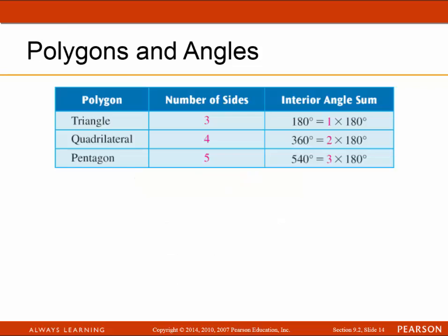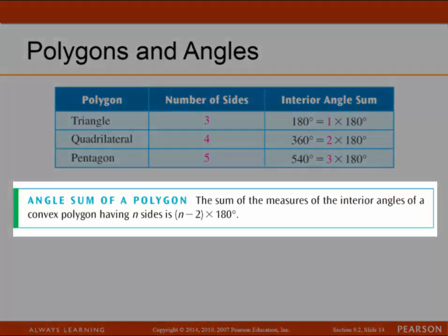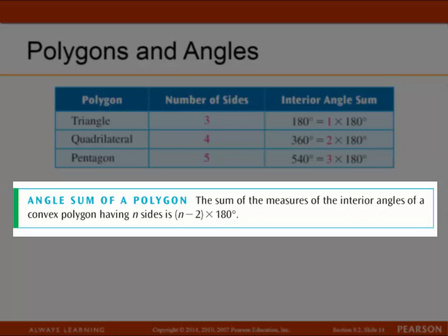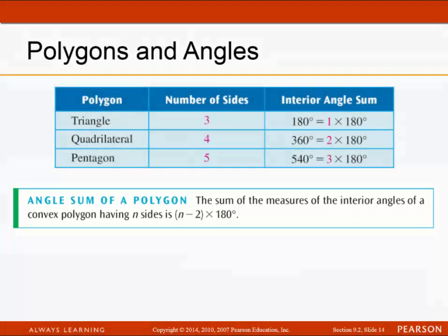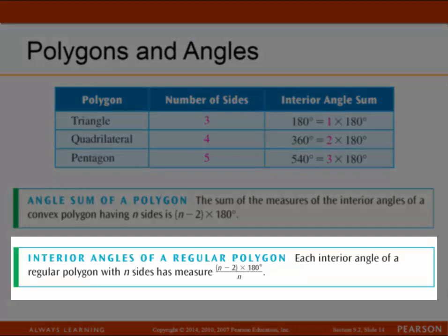Here's a quick summary table: a triangle has 3 sides and 180 degrees; a quadrilateral has 4 sides and 360 degrees; a pentagon has 5 sides and 540 degrees. They're all multiples of 180 degrees. The formula for the angle sum of a polygon is: the sum of the measures of the interior angles of a convex polygon with n sides is (n − 2) × 180 degrees. For a regular polygon, each interior angle measures (n − 2) × 180 ÷ n.